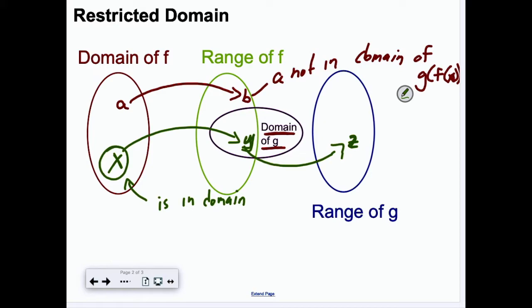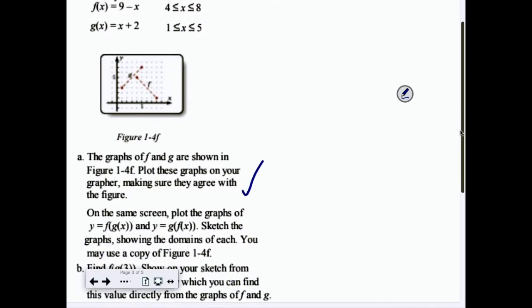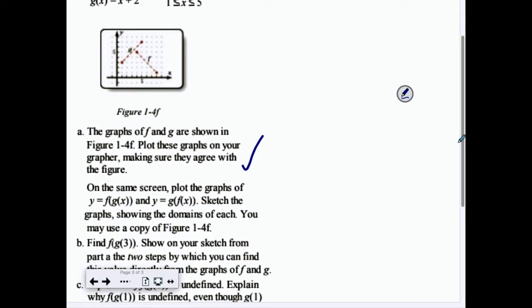This might have all seemed really weird. Let's take a real world example, or at least a textbook example. I want to pause and write these in. By the way, this is number three in the problem set. So if you can't see it, take out your textbook and zoom in there. So we got the graphs. We want to plot these on your graph, making sure that they agree with the figure. They do agree with the figure, because I plotted them before I did this one. Now, we want to also plot the graphs of Y equals f(g(x)) and Y equals g(f(x)).